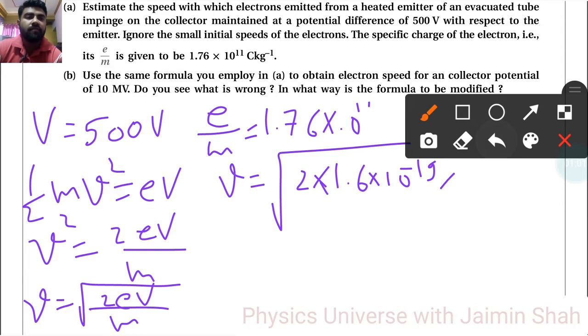So, directly write that formula 1.76 into 10 raised to 11 and into V. So, that is 500.